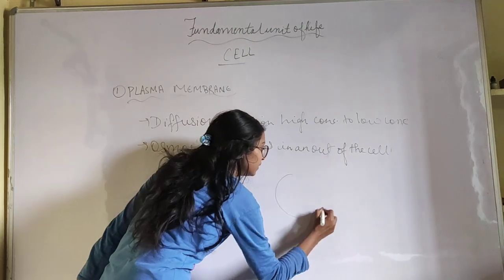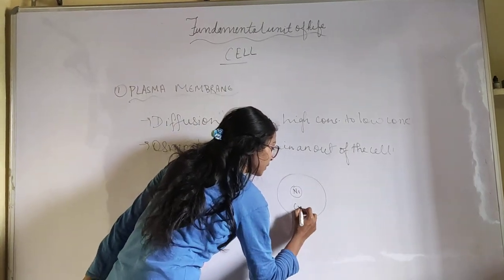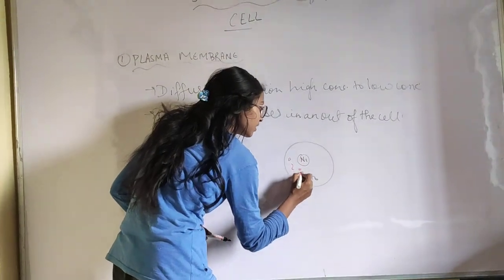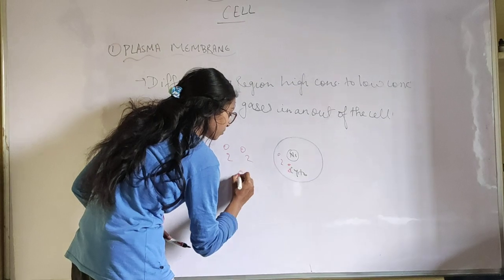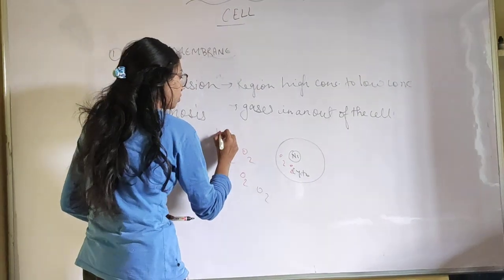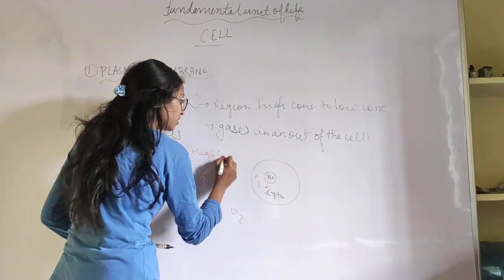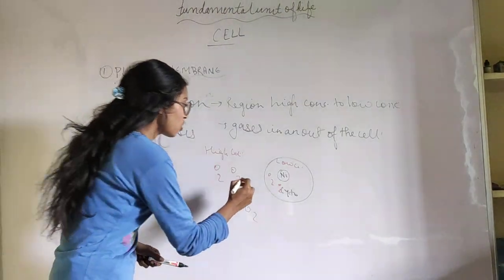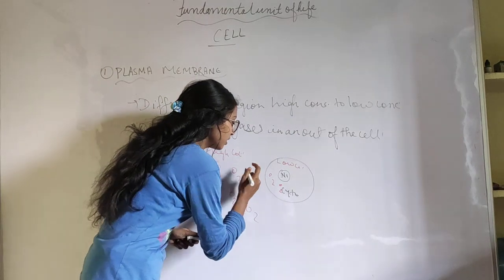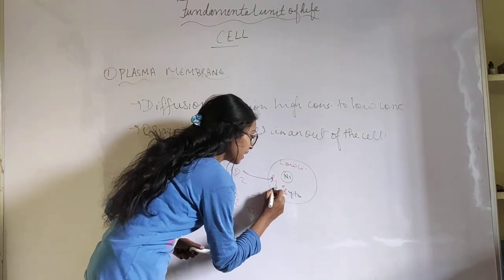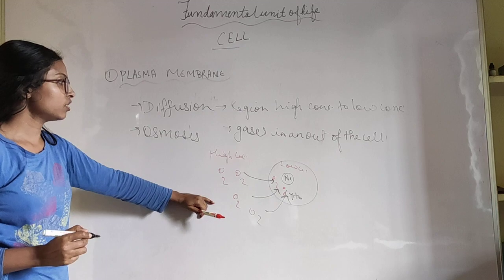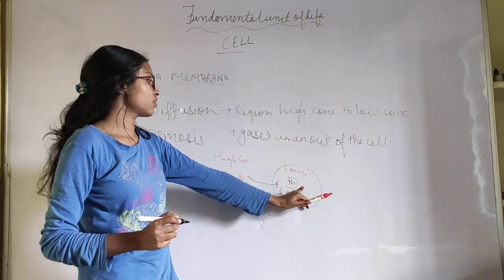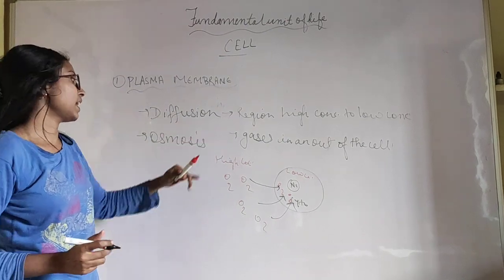For example, if a cell has low concentration of O₂ inside but high concentration of O₂ outside, the oxygen will move from the high concentration region outside into the low concentration region inside the cell. This movement of gases from higher to lower concentration is called diffusion.